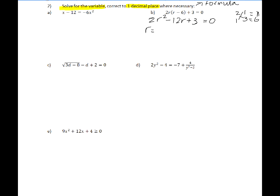So r will be equal to negative b, b is 12 in this case, plus or minus the square root of b squared minus 4 times a times c all over 2a. And we can actually substitute a for 2 in the denominator.